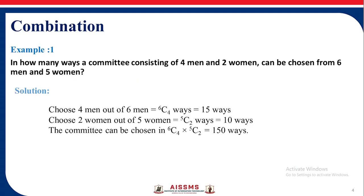Now let us see the examples of the combination. First example: in how many ways a committee consisting of 4 men and 2 women can be chosen from 6 men and 5 women?